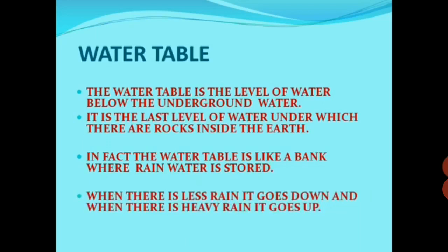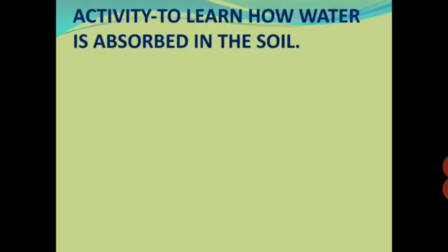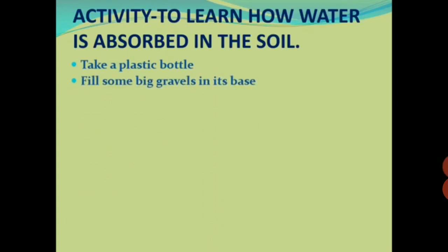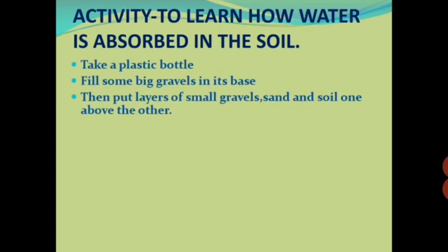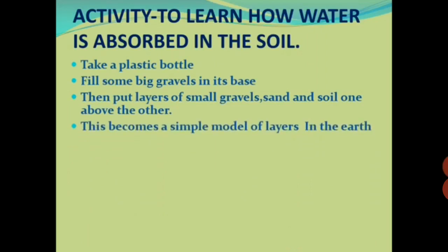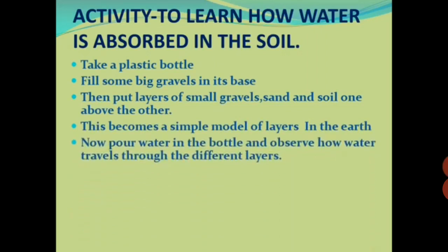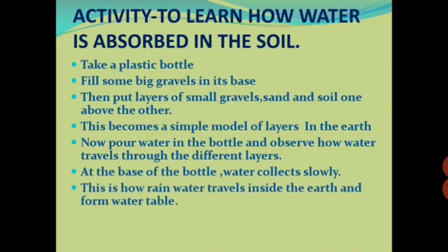When there is less rain, the water table goes down, and when there is heavy rain, it goes up. You can perform an activity to learn how water is absorbed in the soil: take a large plastic bottle, fill some big gravels at its base, then put layers of small gravels, sand, and soil one above the other. This becomes a simple model of layers in the earth. Pour water in the bottle and observe how water travels through the different layers and collects at the base — this is how rain water travels inside the earth and forms the water table.